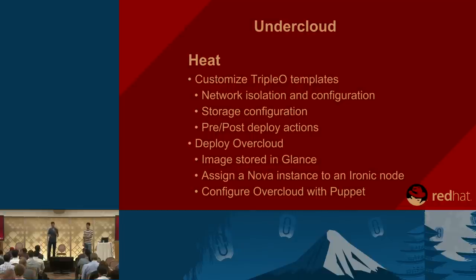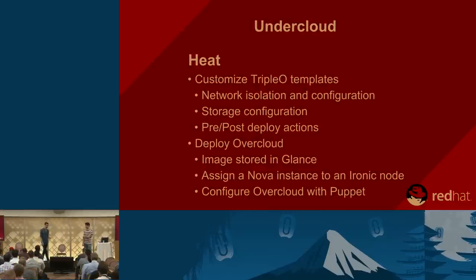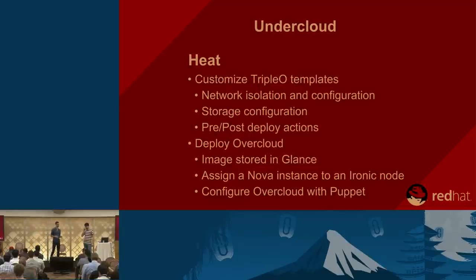You launch the Heat command, it creates resources — for Nova to spawn instances, for example. Nova asks Ironic to provision a node (controller, compute, or storage) using a Glance image uploaded before deployment. When provisioning is done, Heat creates new resources for configuration — asking Puppet to run on each node to configure controllers, computes, and storage.